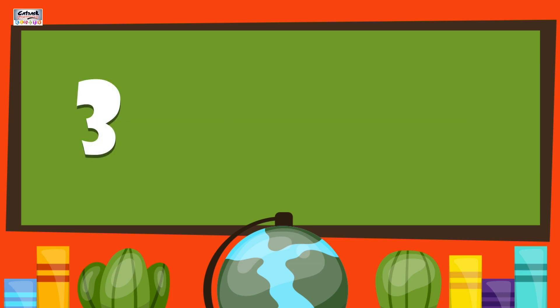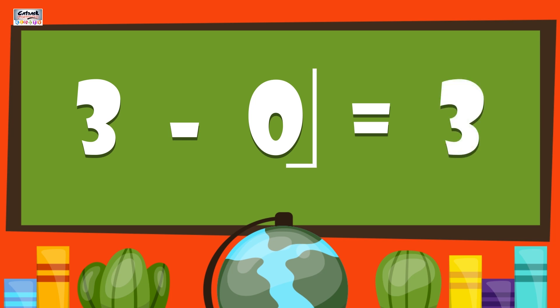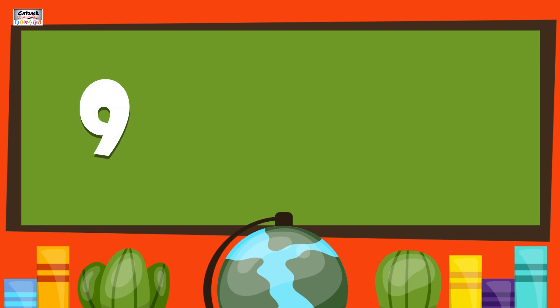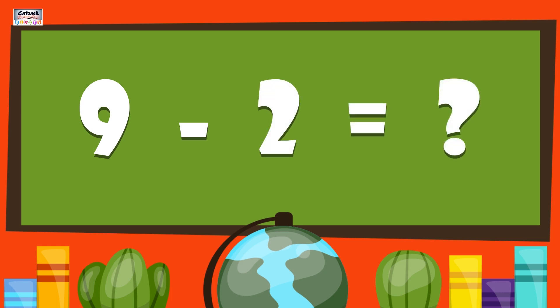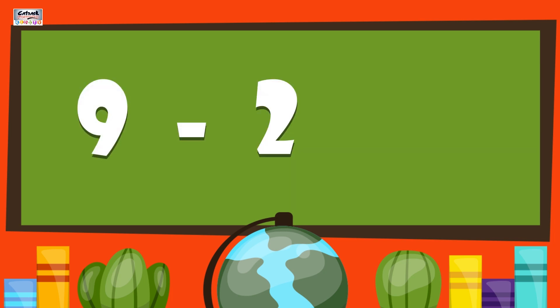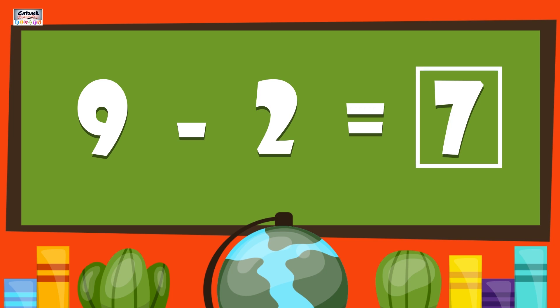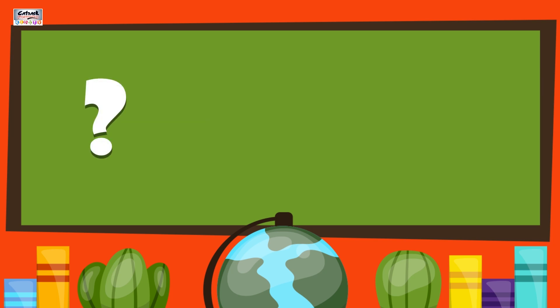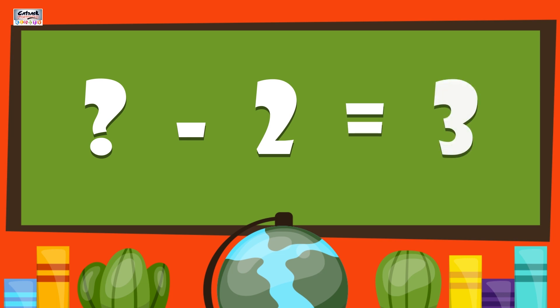5 minus 2 gives us 3. 3 minus 3 gives us 0. 9 minus 2 gives us 3.